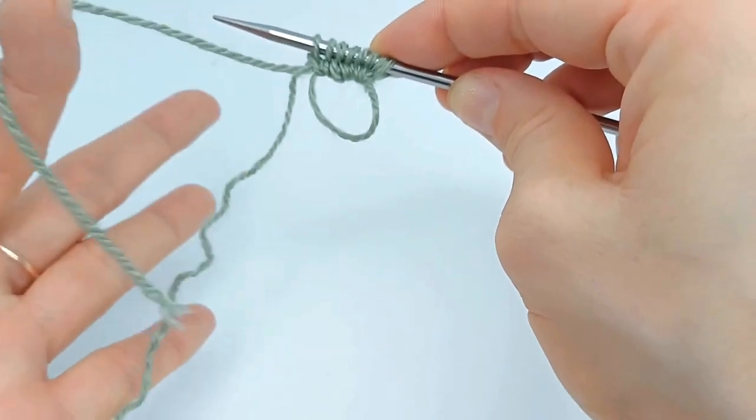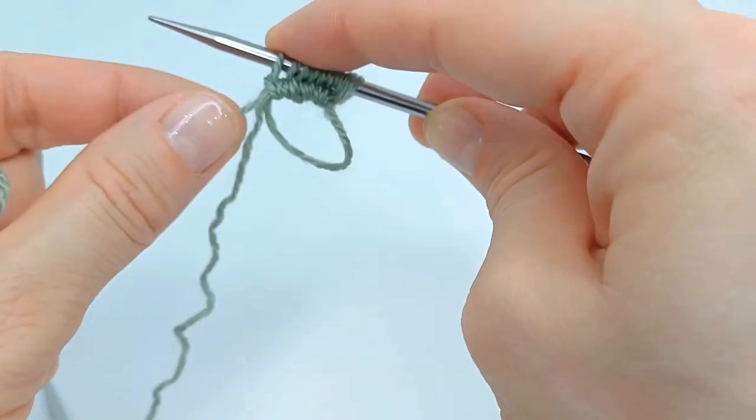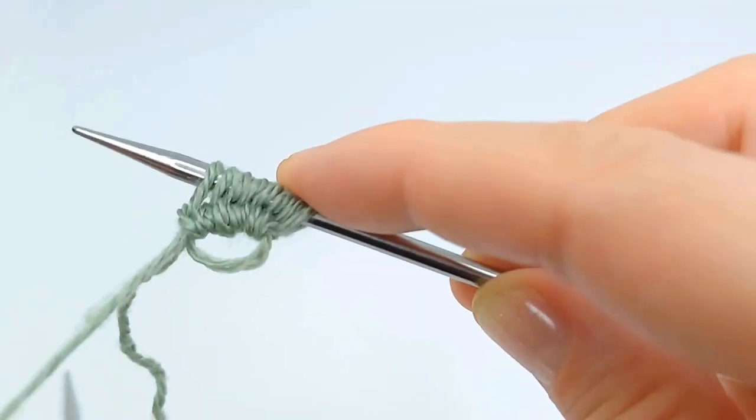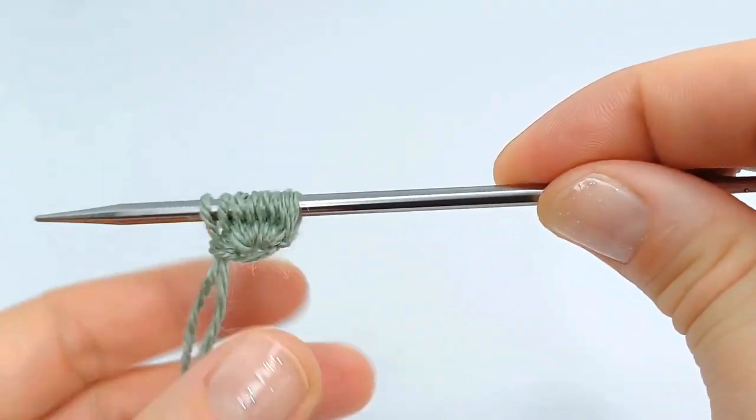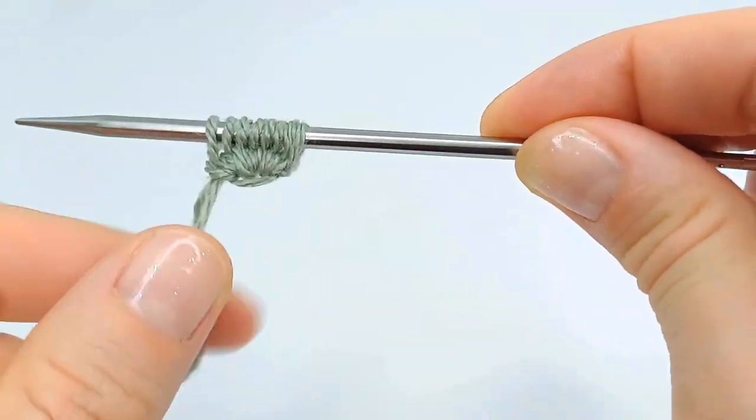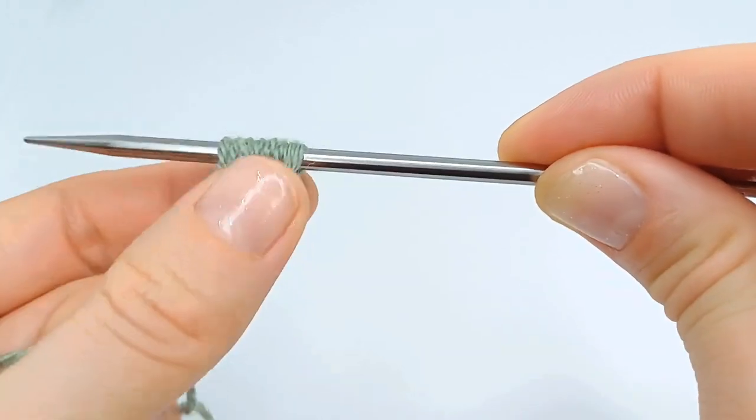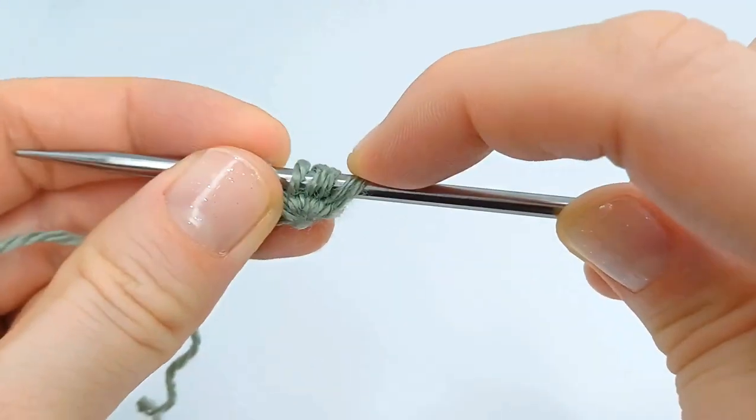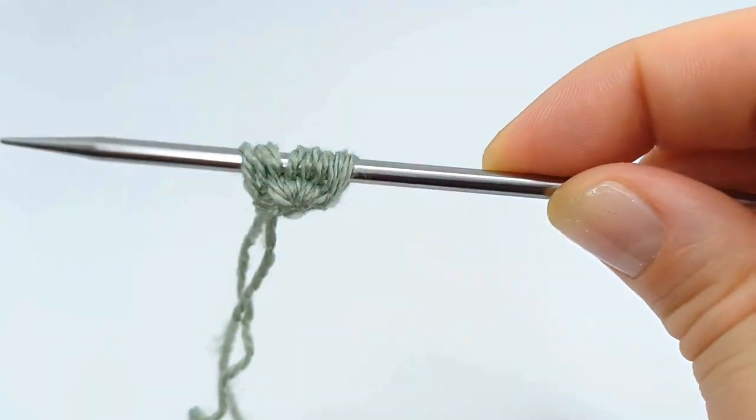When you grab our yarn tail and pull, you can see that our loop is disappearing. And this is our disappearing loop cast on. Now we are ready to distribute the stitches between the needles.